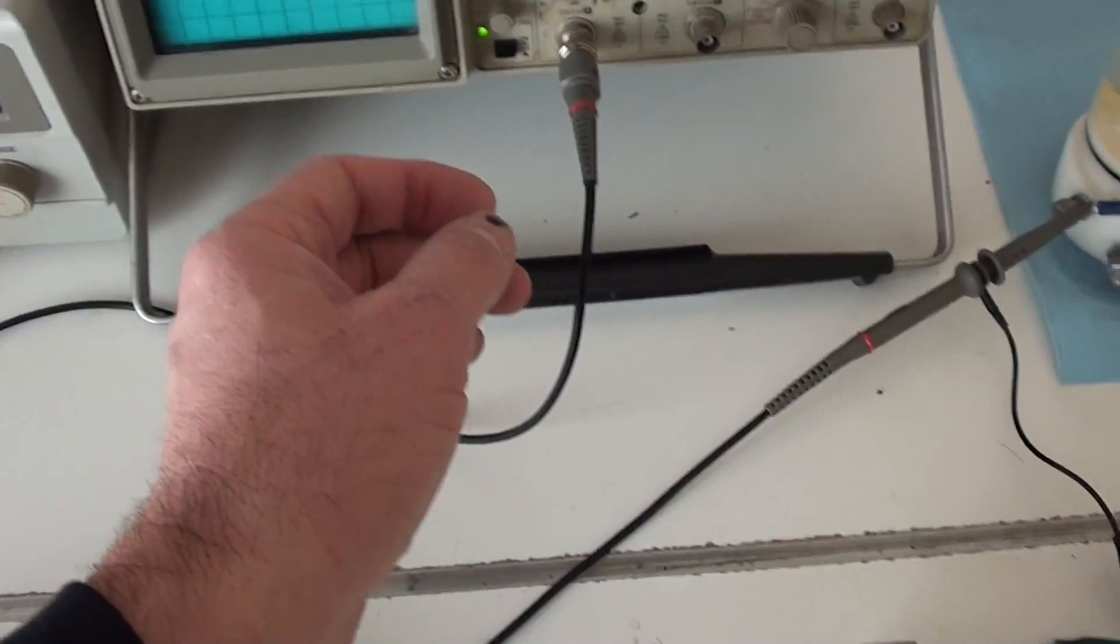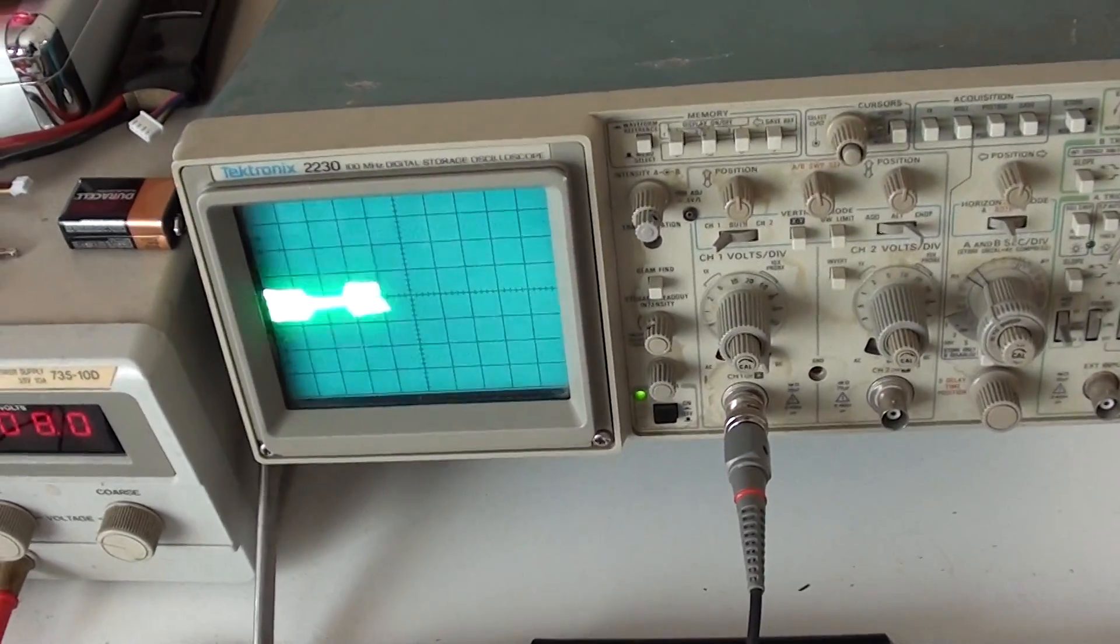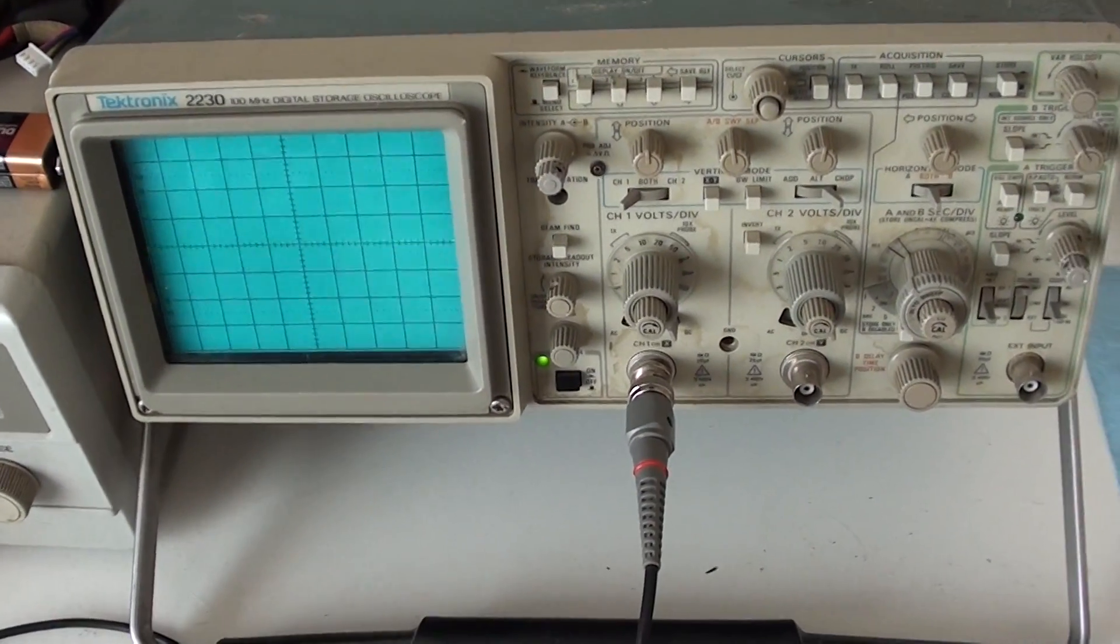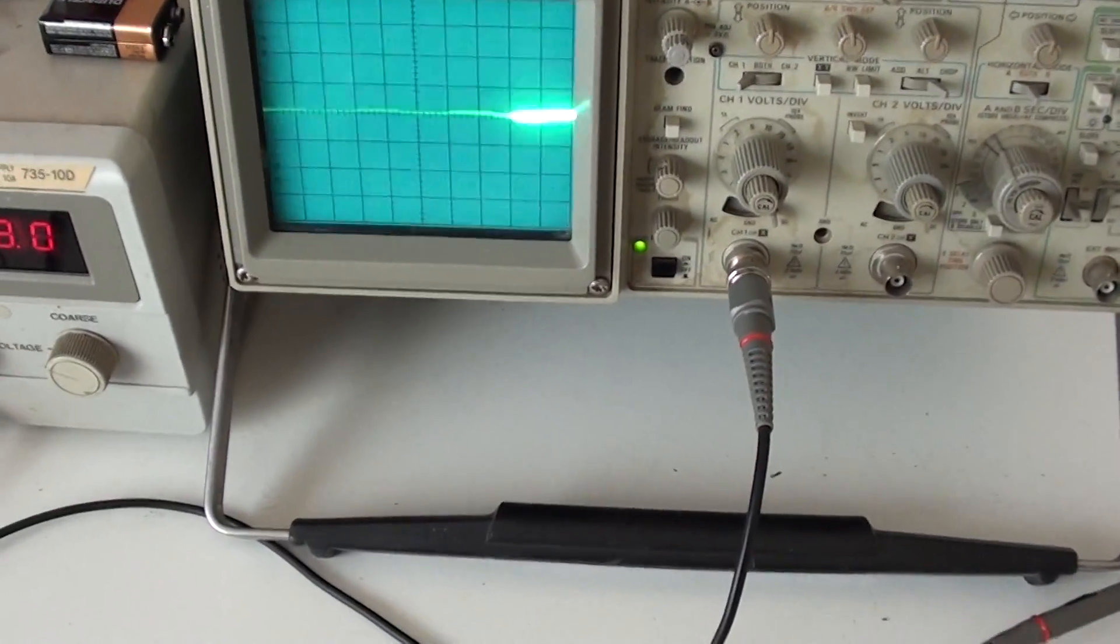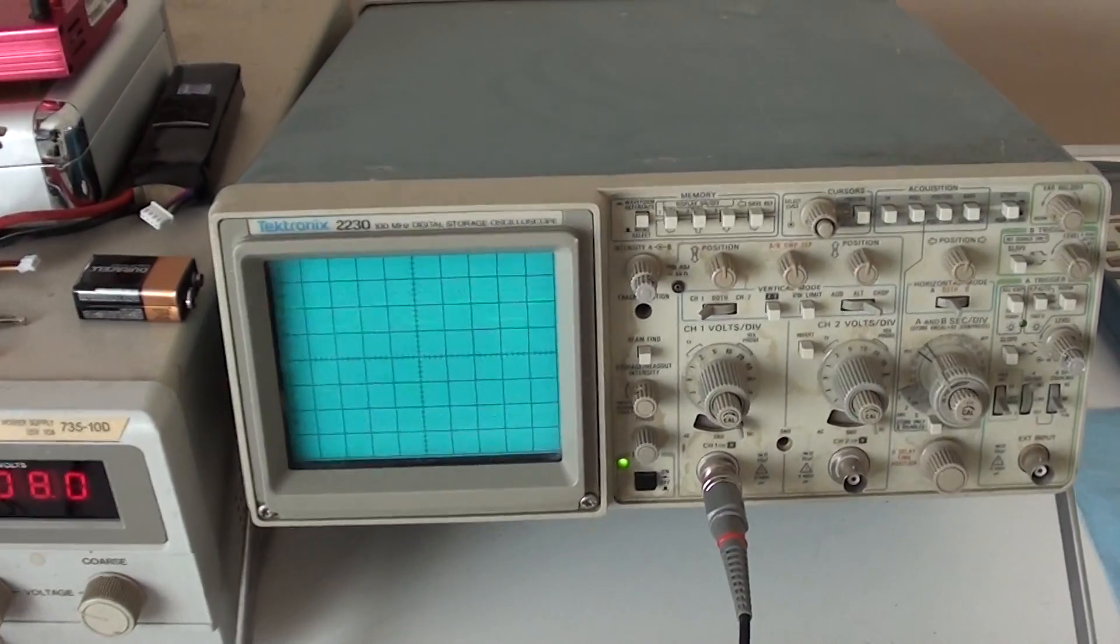Alright, now what I'll do now is I'm going to change this over. Take this ground. There's what's left of the signal. Hook it across the cell. I'm going to reset this at 2 volts per division. Go back to times 1. And that's the DC signal.